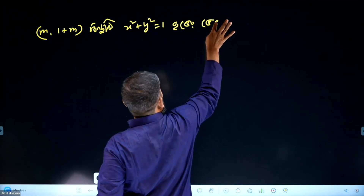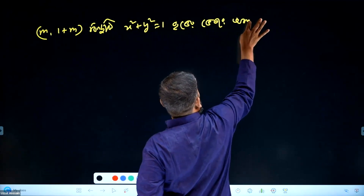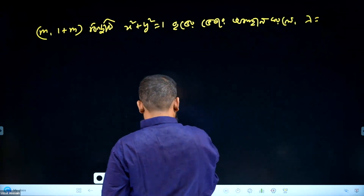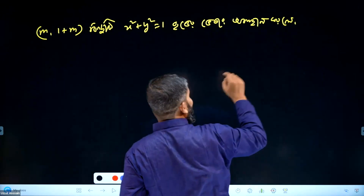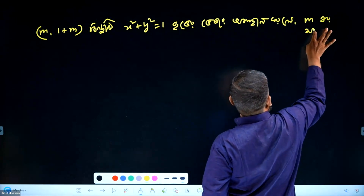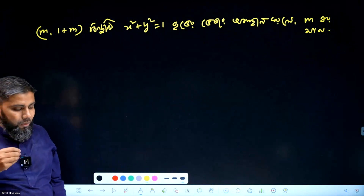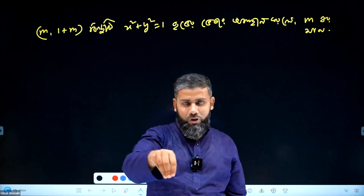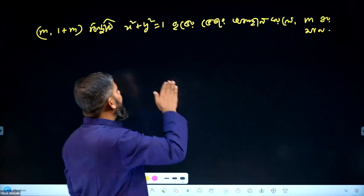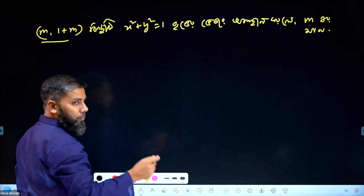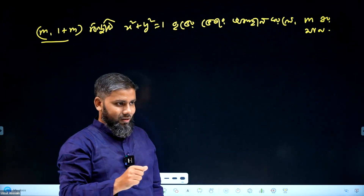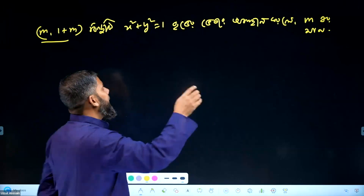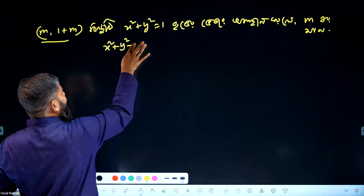Read there. We have to do this. We have the constraint: x square plus y square minus 1 equal to 0. That is, the point lies on the circle, and we need SP less than 0.